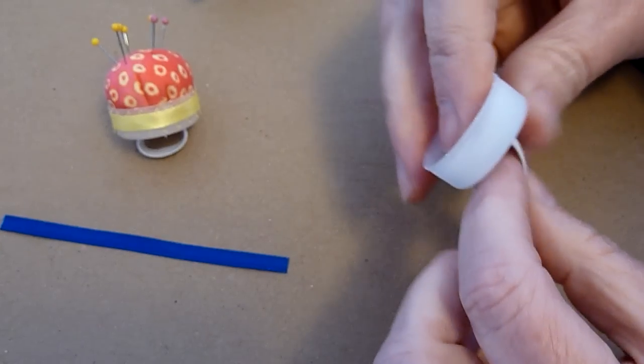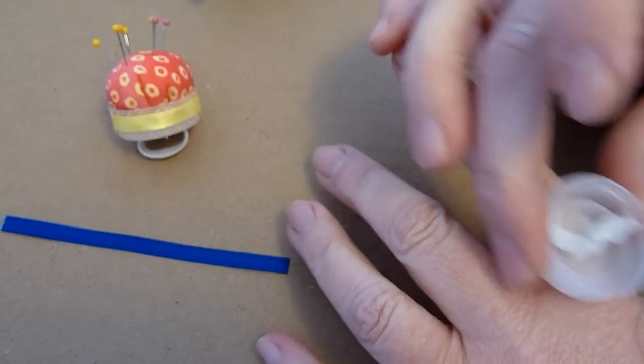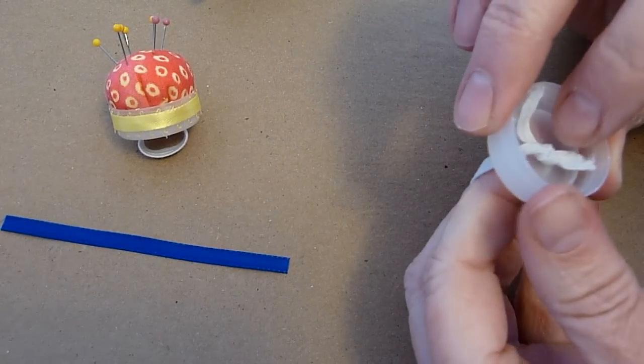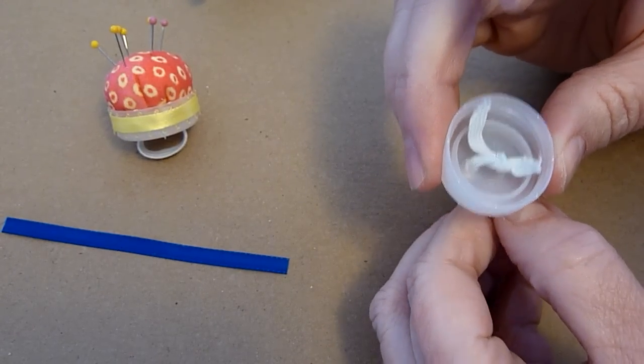After you do your knot, you'll want to double check and make sure it still will work on your finger, and mine will be fine. You can clip off the extra if you'd like, or you can just leave it there.